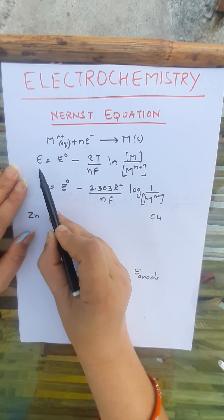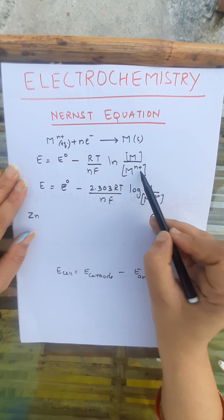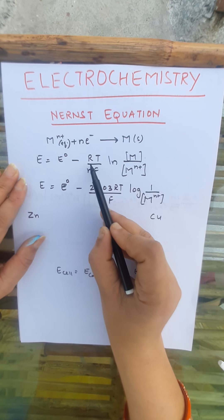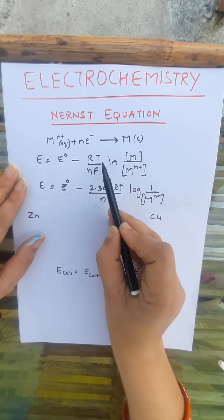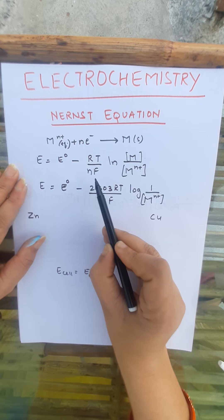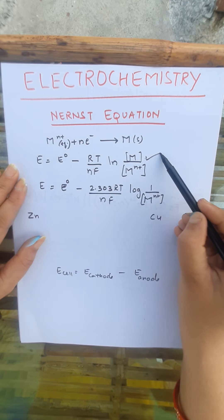We are taking one example where metal M gains N number of electrons and forms M solid. This is the process of reduction — gaining of electrons. For this equation we write: E (electrode potential) = E° (standard electrode potential) minus RT upon NF times ln of [M] upon [M^(N+)].